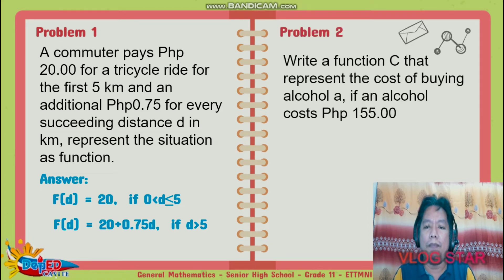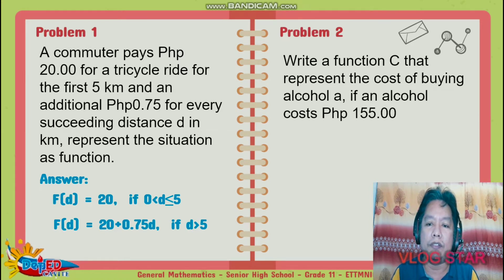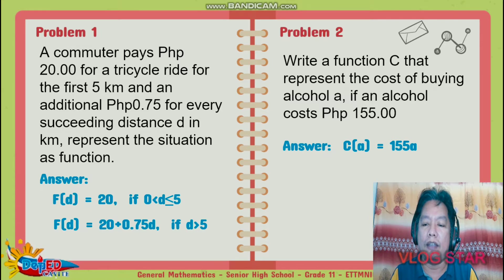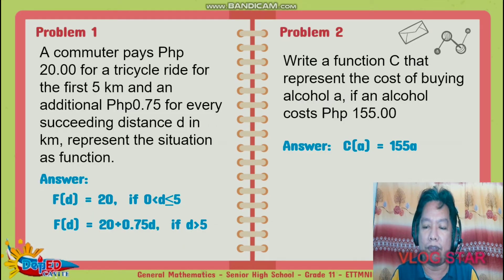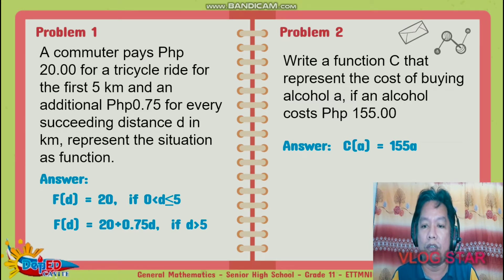Problem number two: write a function C that represents the cost of buying alcohol if an alcohol costs 155 pesos. The answer is C of A is equal to 155A, where A is the number of bottles of alcohol multiplied by 155. That is the function for problem number two.